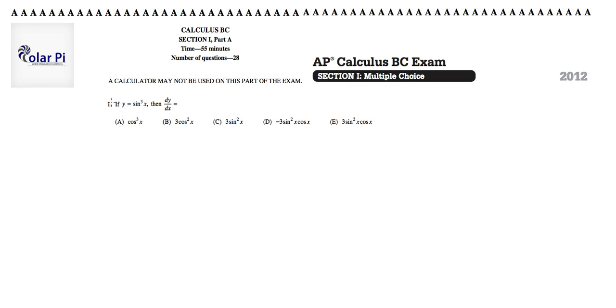Here goes the first question. It says: if y equals sine cubed x, then dy/dx equals... So it's asking for the derivative. We understand that y equals sine cubed x is another way of writing (sine x)³, so we know we require the chain rule.